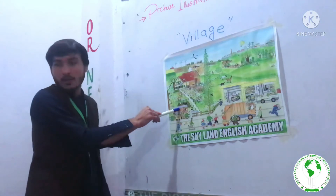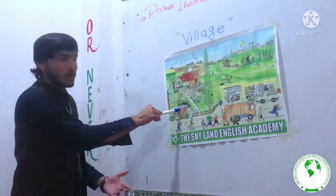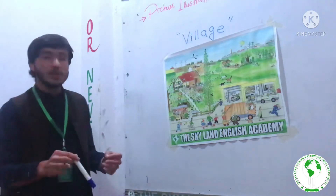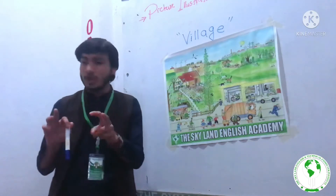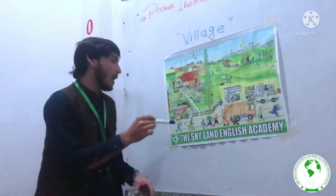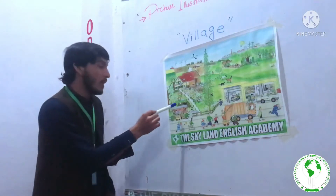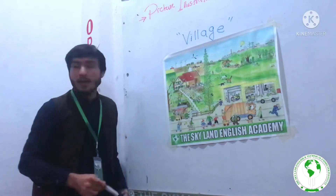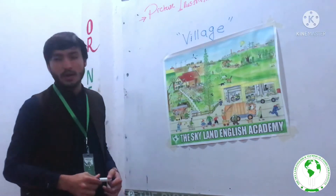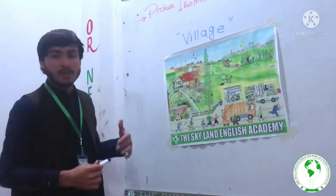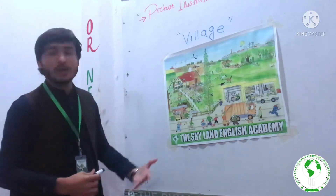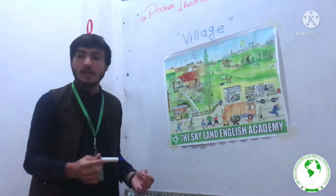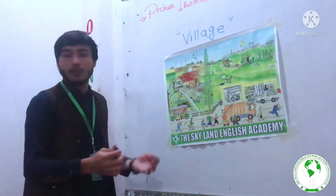That's a duck, and the duck has a combination of three colors — white, black, and brown. The duck is about to fly.